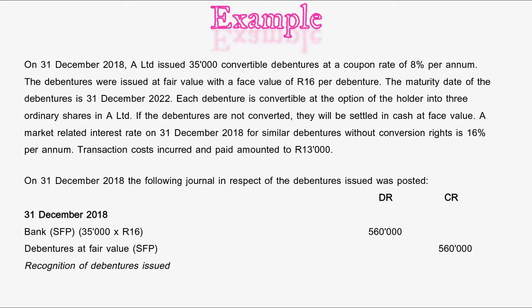On the 31st of December 2018, the following journal in respect of the debentures issued was posted: Bank (Statement of Financial Position) — debit 560,000 rand (35,000 debentures × 16 rand per debenture). Debentures at Fair Value (Statement of Financial Position) — credit 560,000 rand. This was for the recognition of the debentures issued.